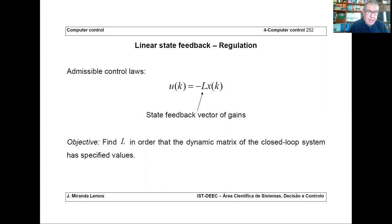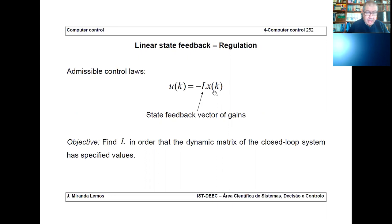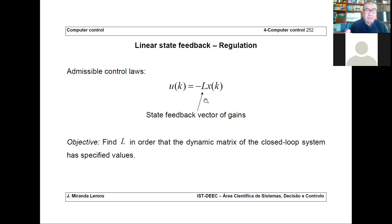These models are linear models that relate increments of the input and output around some equilibrium point. So let's study the regulation problem. My admissible control laws are a feedback of the state: u = −Lx, where L is a row vector of controller gains — l1, l2, and so on — that I have to design. I put a minus sign here as a matter of convention.